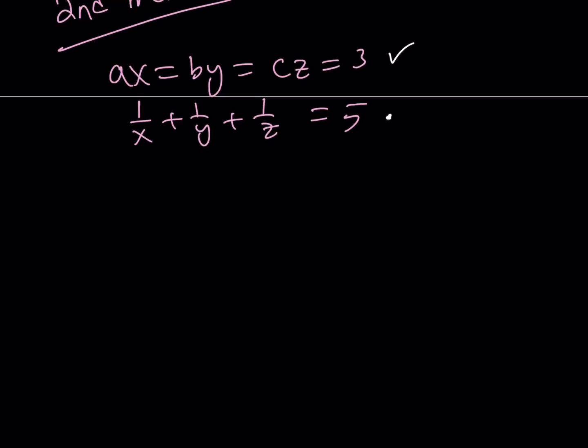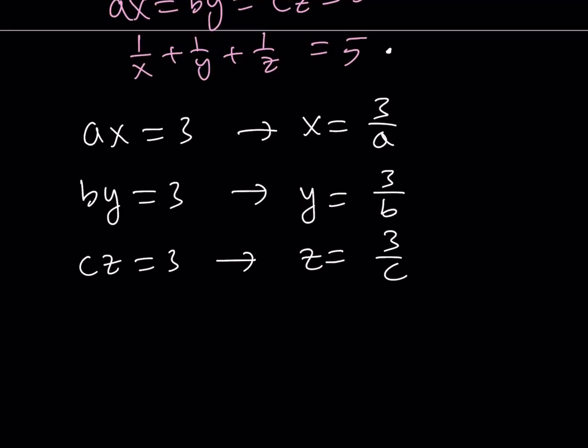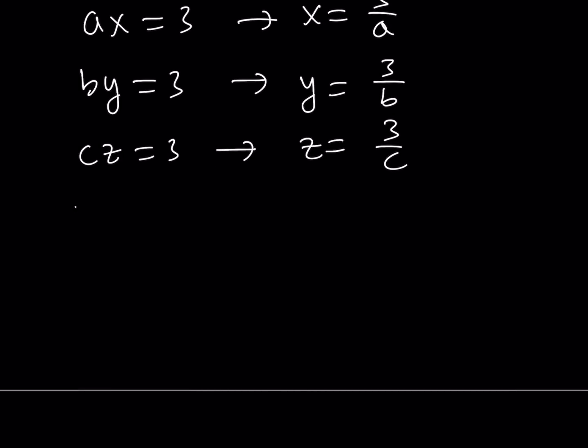So, if I can get XYZ by itself, I can substitute into the second one and hopefully get something from there. So, since AX equals three, this means X is equal to three over A. Since BY is equal to three, then from here, Y is equal to three over B. Since CZ is equal to three, Z equals three over C. Now, remember, we have an equation like this one. One over X plus one over Y plus one over Z. So, the sum of the reciprocals. So, what is that equal to?